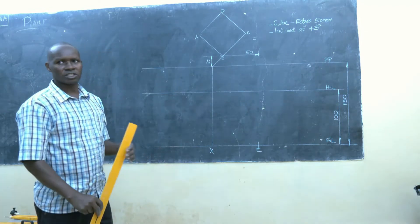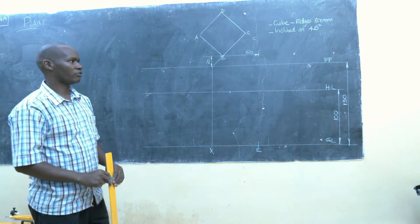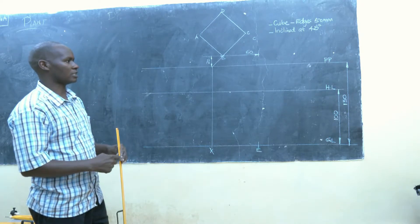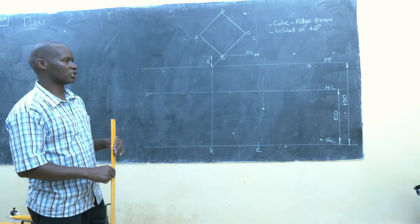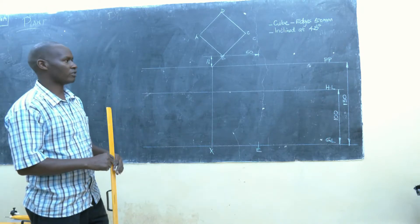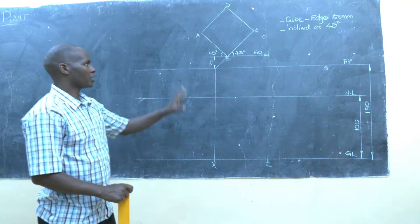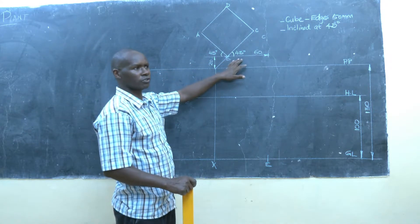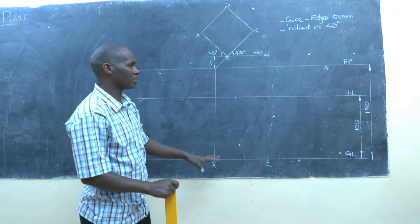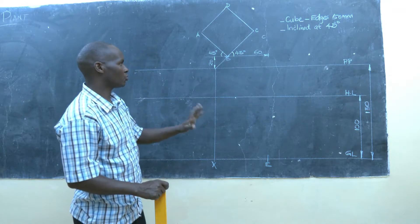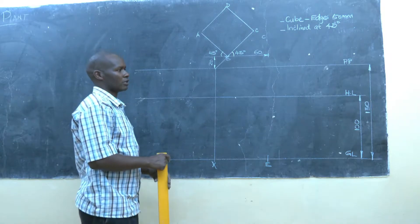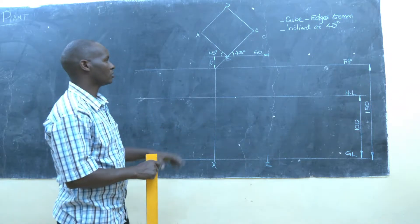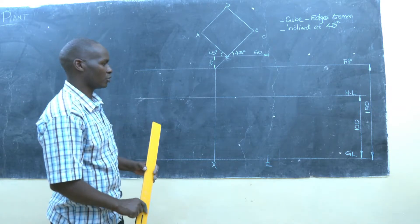Then we need to define the vanishing points — both the left vanishing point and the right vanishing point. For the simple reason that the cube is inclined at an angle of 45 degrees, and because this is a two-point perspective, we need the left vanishing point and the right vanishing point.